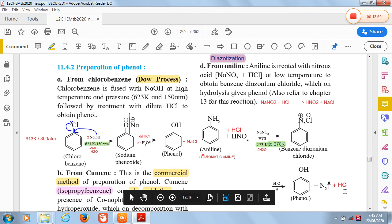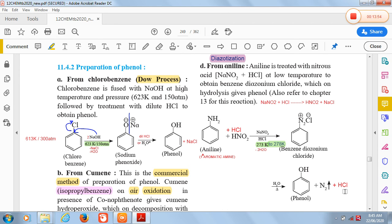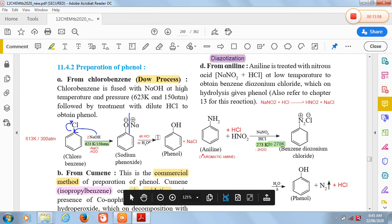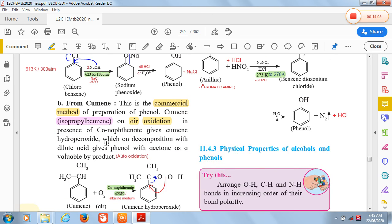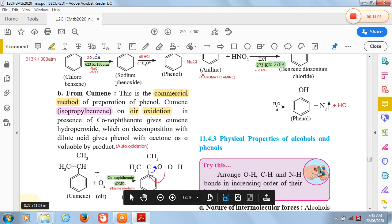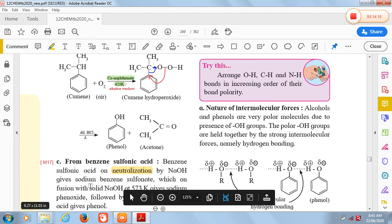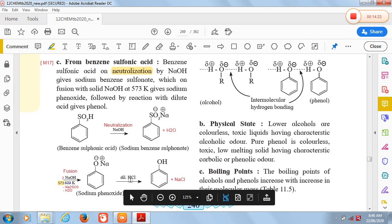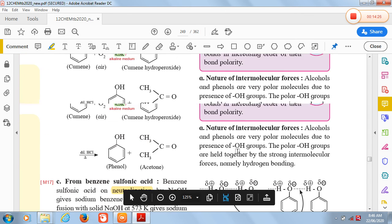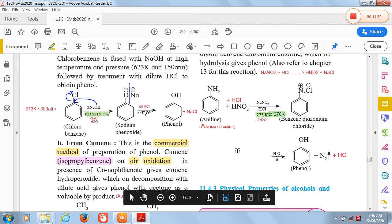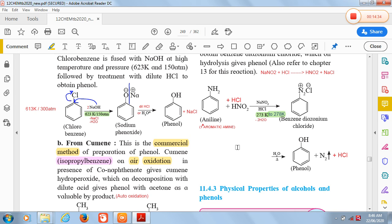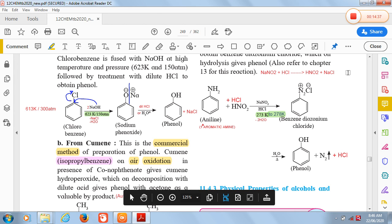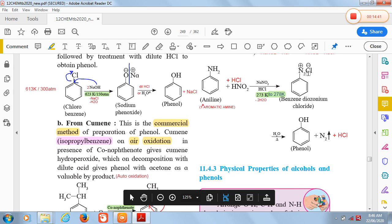These are the four methods of preparation of phenol. Many times questions may be asked on methods of preparation of phenol in your exams. Let me revise: first is from chlorobenzene by Dow process, second is from cumene, it is commercial method with reagent oxygen in presence of cobalt naphthenate and then dilute acid. Third is from benzene sulfonic acid, there are two steps in which NaOH is used and last step is action of dilute acid. And last reaction is from aniline by diazotization with NaNO2 and HCl as the reagent. So this is about the methods of preparation of phenol.